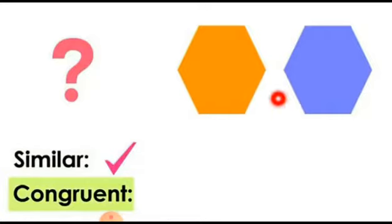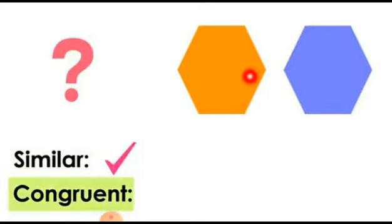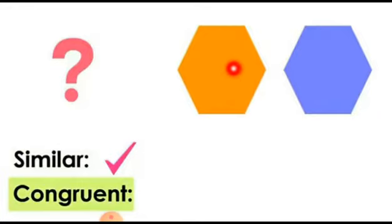So to summarize: what is concurrent? Same shape, same size. What is a similar figure? Same shape but different size. Now check these two figures and tell me whether they are similar or concurrent. Yes, they are concurrent because they have the same size and the same shape.